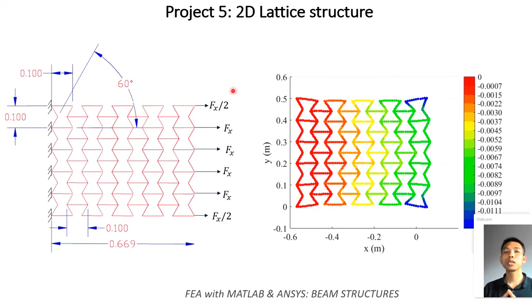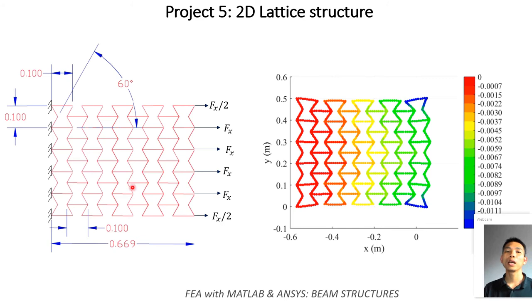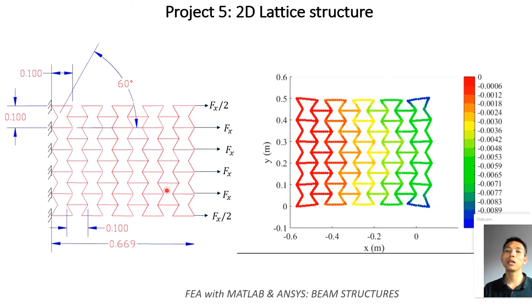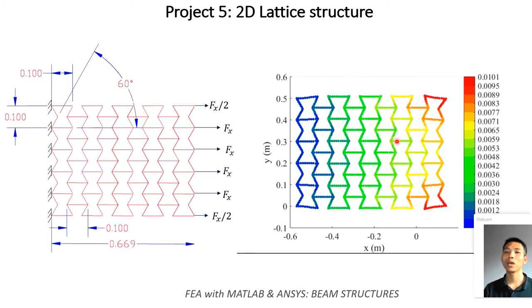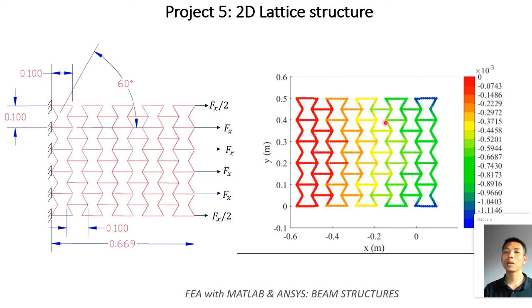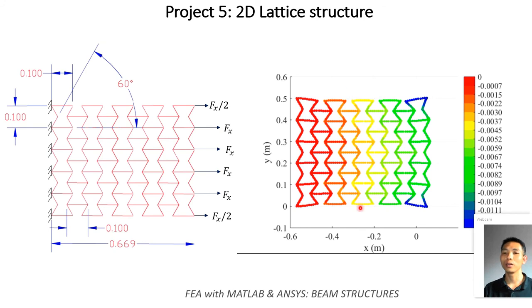The next project is Project Number Five — a 2D lattice structure. We will investigate a lattice structure as shown on the left-hand side and capture the very interesting behavior of that lattice structure. People call it a negative Poisson ratio structure: when you tension it in the wide direction, it gets bigger. You will learn how to write FEM code and the ANSYS input file for that kind of structure. When we tension it, it gets bigger, and when we compress it, it gets smaller — the opposite of a normal Poisson ratio structure.